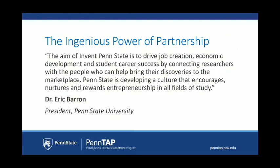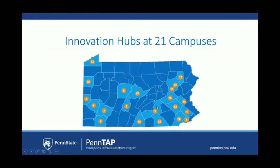President Barron says: 'The aim of Invent Penn State is to drive job creation, economic development, and student career success by connecting researchers with the people who can help bring their discoveries to the marketplace. Penn State is developing a culture that encourages, nurtures, and rewards entrepreneurship in all fields of study.' Penn State, being the land grant university for Pennsylvania, takes this mission very seriously. In the 21st century, technology and startups are where high-paying jobs and growth will be, and we want to show students they don't have to go to Silicon Valley — great opportunities exist right here in Pennsylvania.